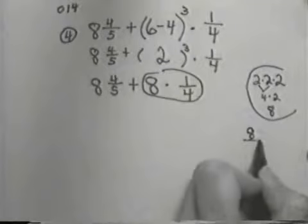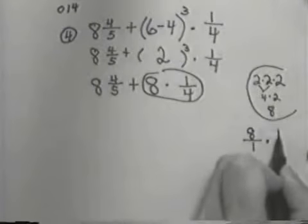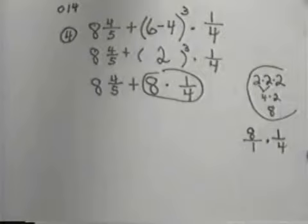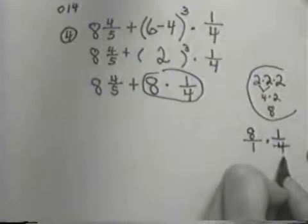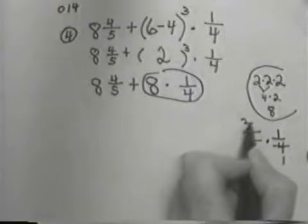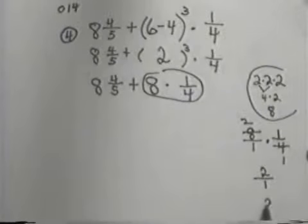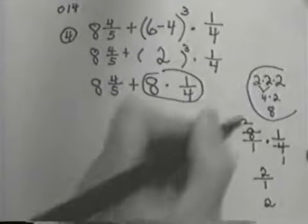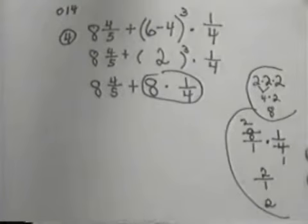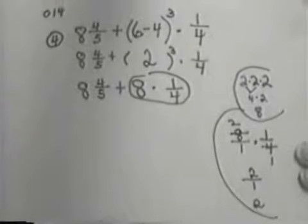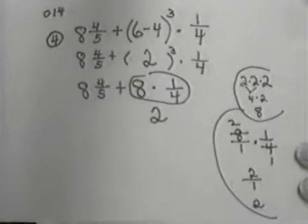If I came over to the side, I'd have 8/1 times 1/4. So I would reduce 4 into 4 one time, 4 into 8 two times. So I'd get 2/1, which would give me 2. So my 8 times my 1/4 would be 2. Now you certainly could do that 8 times 1/4 right there instead of coming over to the side.